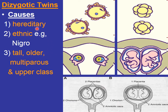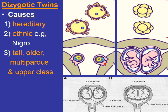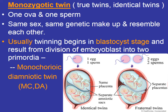To summarize the causes of dizygotic twins: hereditary, ethnic and racial factors (more in Black people, more in white people than Asians), and the chances are higher in tall, older, multiparous females belonging to the upper class. Since two ova are fertilized by two separate sperm, they implant at two different sites and each has its own chorion, amnion, and placenta.